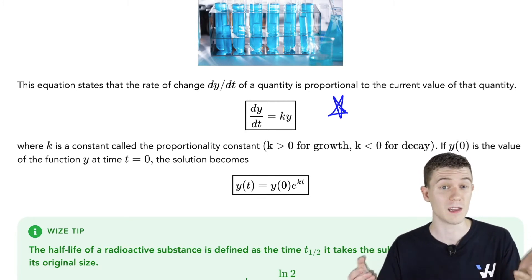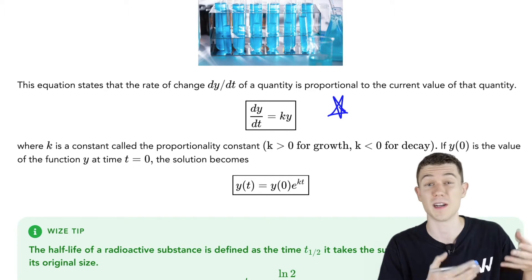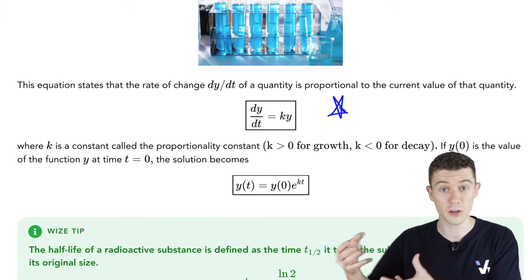This makes sense if you think about biological examples. Say you only have two parents for a population. They can reproduce and grow the population at a much slower rate than a large population.